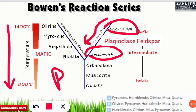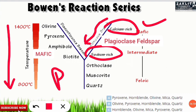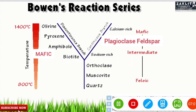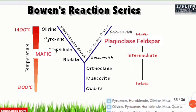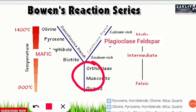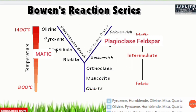As the temperature decreases in the continuous branch, calcium-rich minerals transform into sodium-rich minerals. On the left-hand side — the discontinuous branch — the sequence is olivine, pyroxene, amphibole, and biotite, representing the mafic minerals. These two branches eventually interconnect into a single branch known as the residual phase.